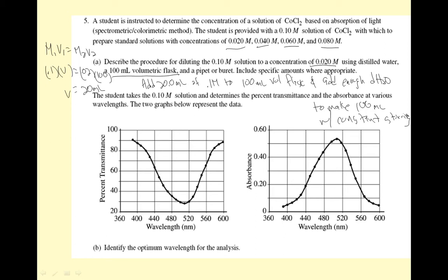The student takes the 0.1 molar solution and determines the percent transmittance and absorbance at various wavelengths. The two graphs below represent the data. This is one of those dumb graphs that says what's the answer, here's the answer. If you look, it's even the same thing. To me that's 500, this is maybe 510. Why would they give us both of these? Because some teachers do transmittance and some do absorbance, so they give us both. Identify the optimum wavelength. I just wrote it down, 510 nanometers.